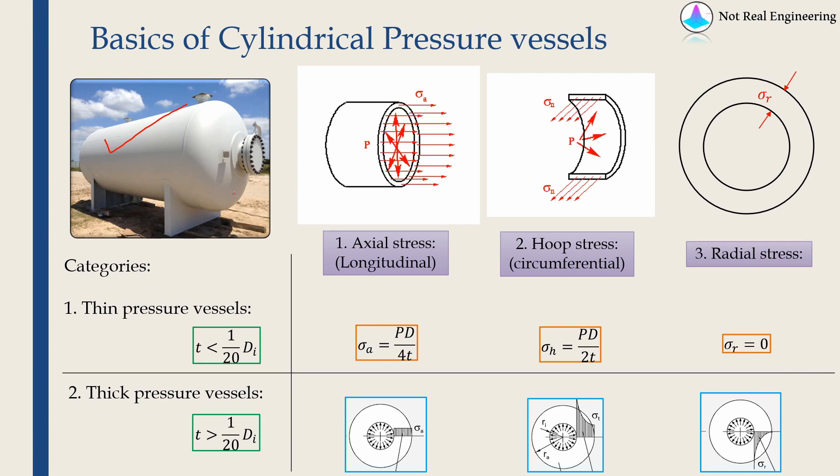Whenever we do pressure vessel analysis, we are typically interested in three types of stresses which are acting on a pressure vessel. So if you take a vertical section like this, you will find a stress along the axial direction, which is known as axial stress or longitudinal stress.